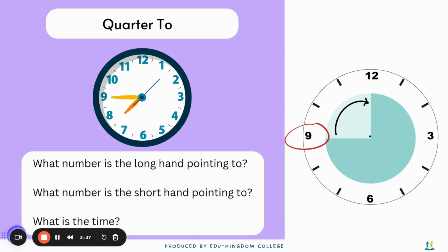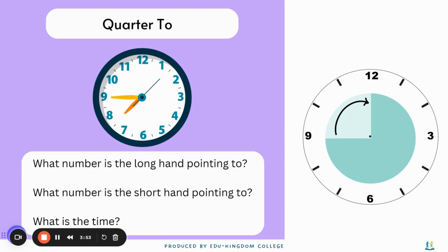Similarly, for quarter to, the long hand must be pointing to the number 9. You will notice the hour hand is going to be between two numbers. The hour must be the number it is moving towards. Like this clock on the left: the hour hand is between 7 and 8. Since it's moving towards 8, the hour will be 8. Hence, the time here will be quarter to 8.